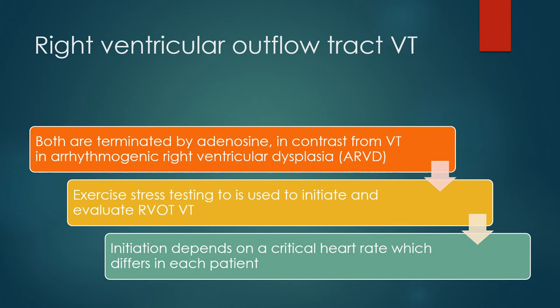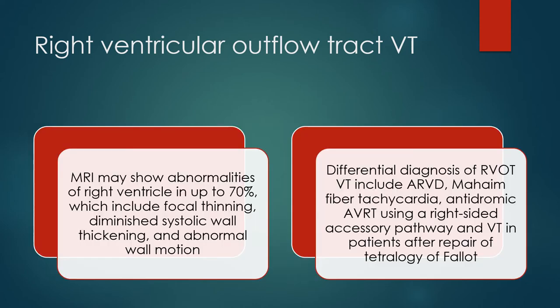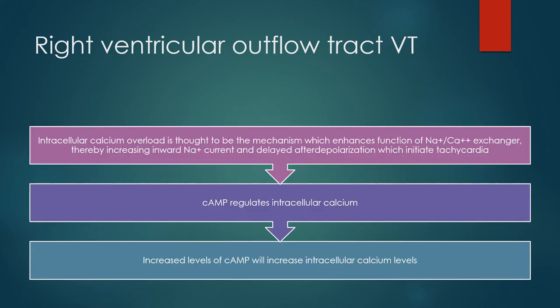Initiation depends on a critical heart rate which differs in each patient. MRI may show abnormalities of the right ventricle in up to 70%, including focal thinning, diminished systolic wall thickening, and abnormal wall motion. Differential diagnoses of RVOT VT include ARVD, Mahaim fiber tachycardia, antidromic AVRT using a right-sided accessory pathway, and VT in patients after repair of tetralogy of Fallot.